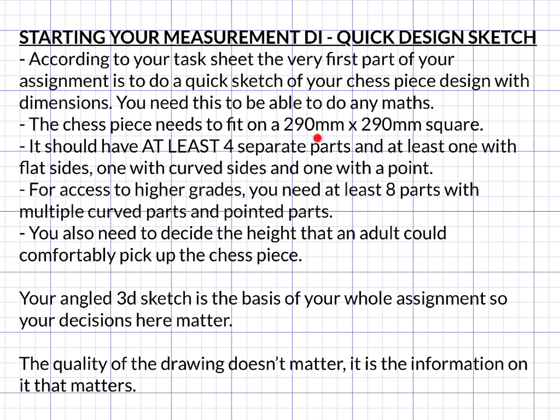The chess piece needs to fit on a 290mm by 290mm square, so that's 29cm by 29cm. It should have at least four separate parts, so four pieces and at least one with flat sides, one with curved sides and one with a point.